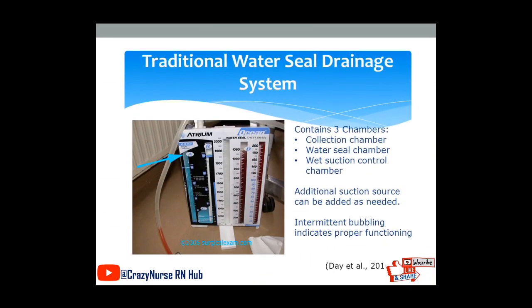For the traditional water seal, also referred to as wet suction, intermittent bubbling indicates that the system is functioning properly. It has 3 chambers: a collection chamber, a water seal chamber in the middle, and a wet suction control chamber.